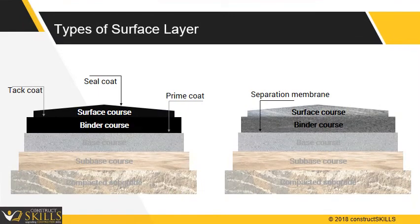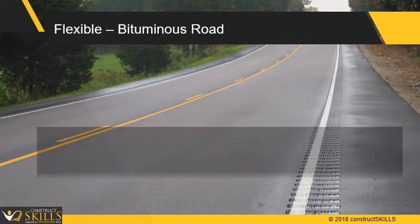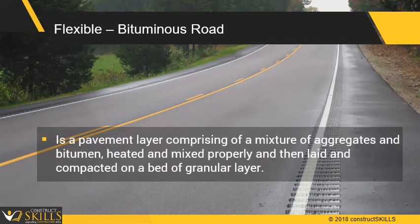There are two types of pavements: flexible and rigid. Flexible pavements are made from bitumen and rigid pavements are made from concrete. Flexible pavement, commonly called bitumen road, is a pavement layer comprising a mixture of aggregates and bitumen, heated and mixed properly, then laid and compacted on a bed of granular layer. The load is transferred to lower layers through points of contact of granular material, and is distributed over a wider area.